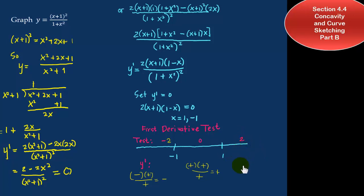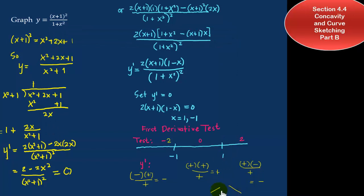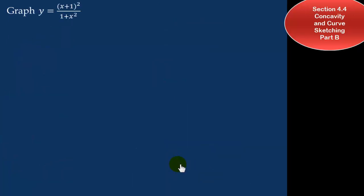What about to the right of negative 1? Testing x equals 2: y prime at 2 gives positive times negative over positive, which is negative. There is a change of sign — to the left of 1 it's increasing, to the right of 1 it's decreasing — so we have a local maximum occurring at x equals 1 and a local minimum occurring at x equals negative 1.